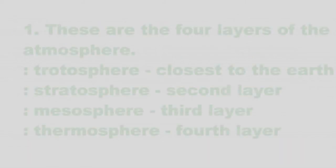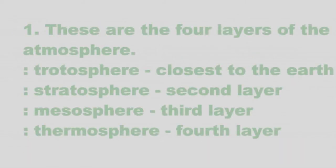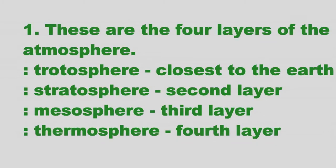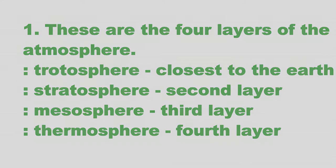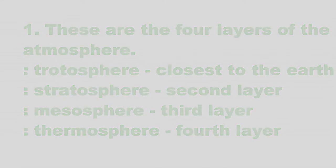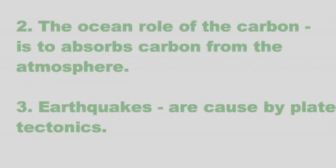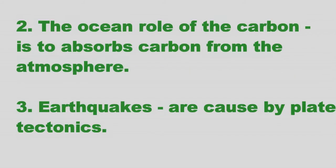One: these are the four layers of the atmosphere — troposphere, closest to the Earth; stratosphere, second layer; mesosphere, third layer; thermosphere, fourth layer. Two: the ocean's role in the carbon cycle is to absorb carbon from the atmosphere.